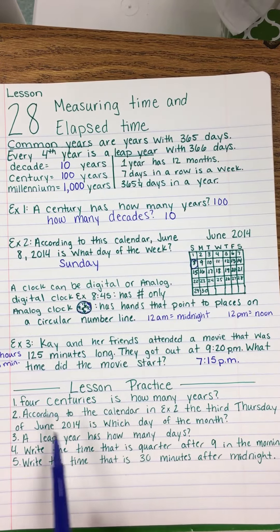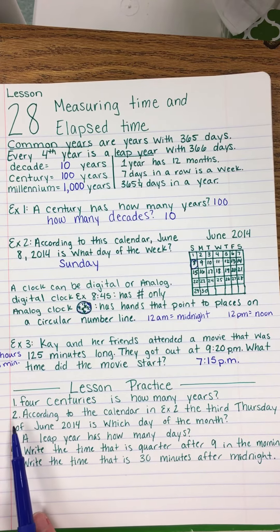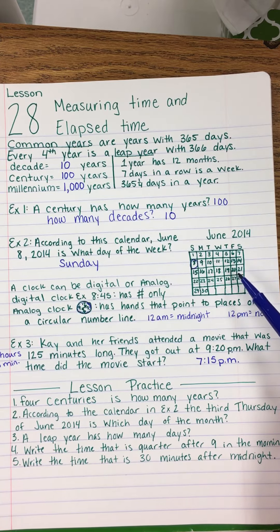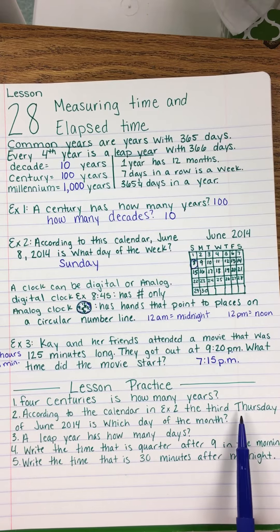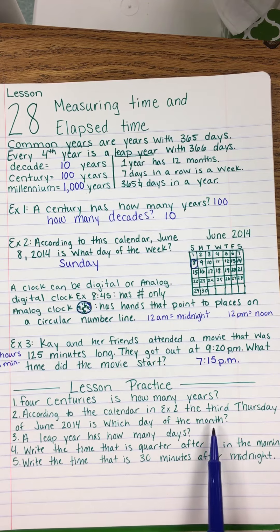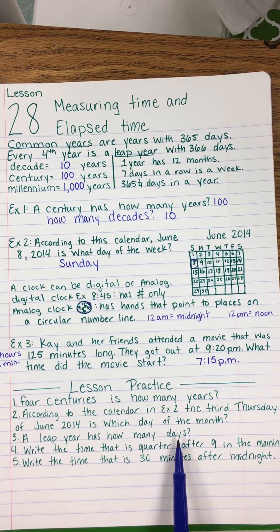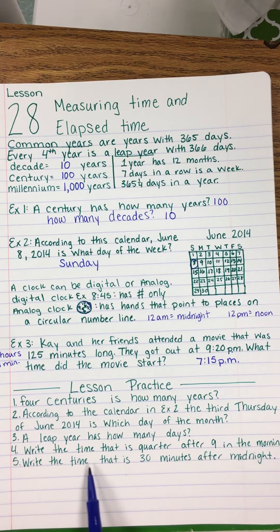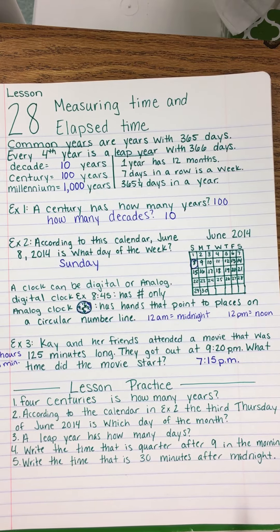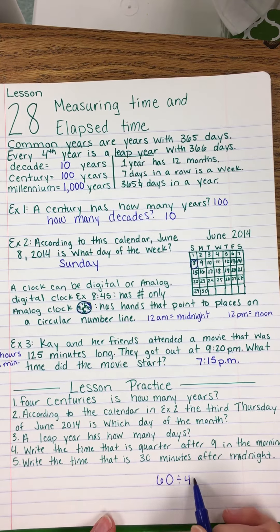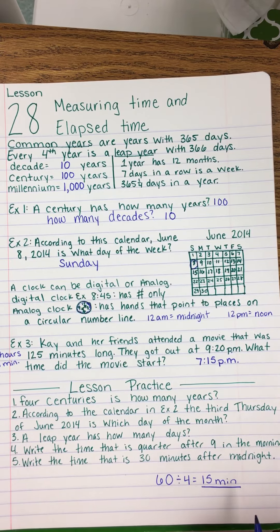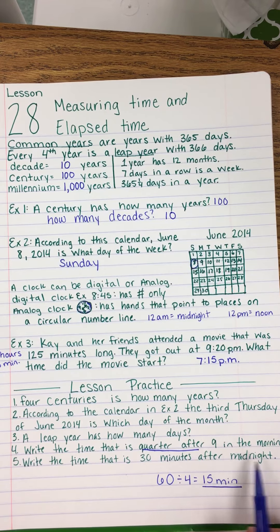Now for some lesson practice problems. Four centuries is how many years? According to the calendar in example two, find the third Thursday of June — count down three Thursdays to get which day of the month. A leap year is how many days? Write the time that is quarter after 9 in the morning. Write the time that is 30 minutes after midnight — make sure you include a.m. or p.m. Note: if an hour is 60 minutes long and a quarter means divided by four, each quarter is 15 minutes long. So a quarter after means 15 minutes after.